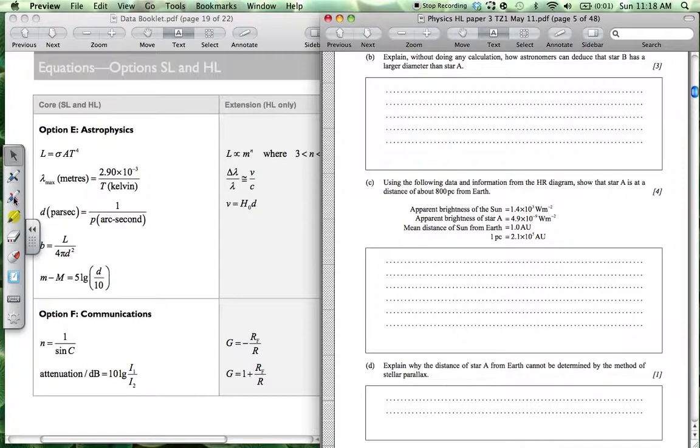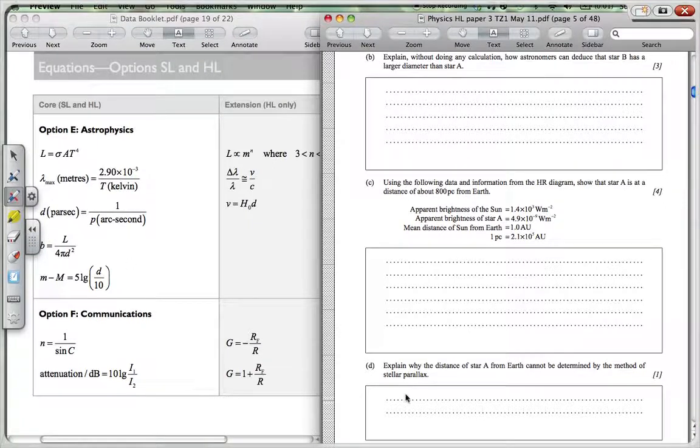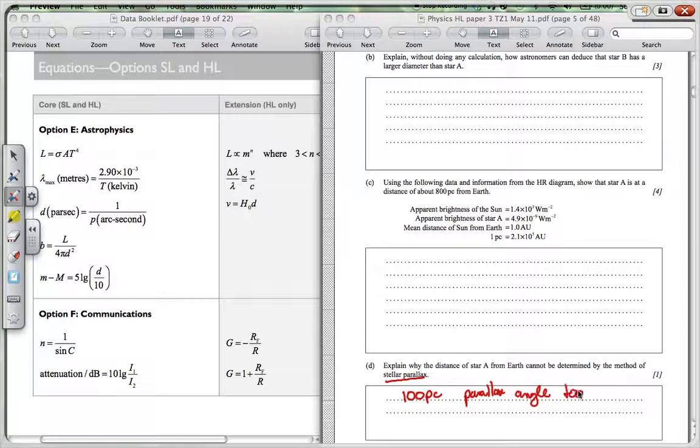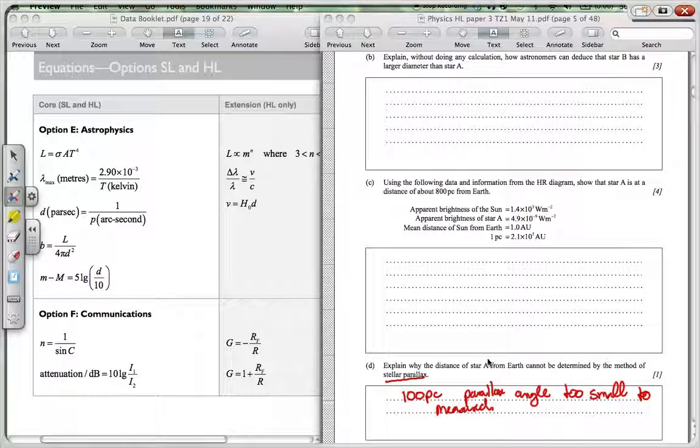Well, star A is 800 parsecs away. This method of stellar parallax works up to about 100 parsecs is the maximum. After that, this parallax angle becomes too small to be measured. So this star is beyond the reach of using this method.